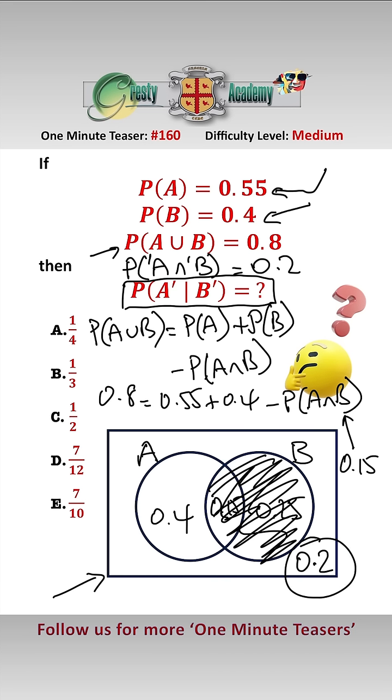Therefore, the probability of not A is 0.2 over the sum of the restricted sample space, 0.6. So the probability we seek is 0.2 over 0.6, which is one-third, answer B.